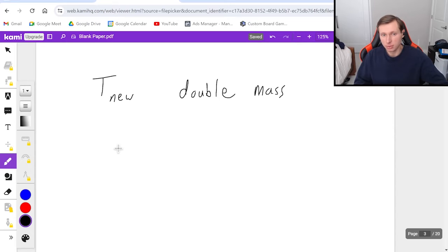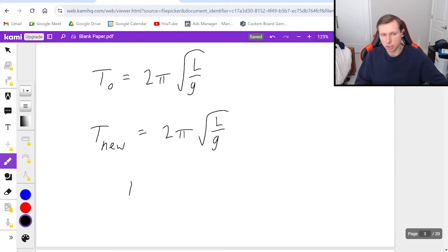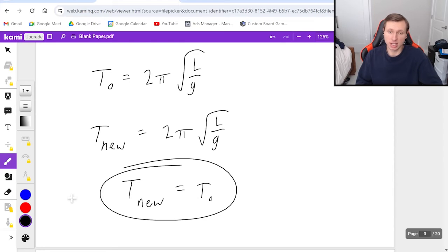So here's what I'm going to tell you. First, write T naught equals 2 pi root L over G, just like we did before. And now for T new, with double the mass, you'll notice that mass doesn't even show up in this equation, which means it stayed the same. The period did not change. The new period is still equal to the original. And that's the correct answer.